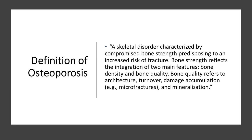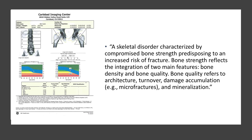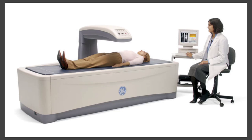Let's take another look at the definition of osteoporosis. It is a skeletal disorder characterized by compromised bone strength, predisposing to an increased risk of fracture. Bone strength reflects the integration of two main features: bone density and bone quality. Bone quality refers to the architecture, turnover, damage and accumulation — such as micro fractures — and also the mineralization of the bone. So with a DEXA scan, we measure both bone density and bone mineral content.